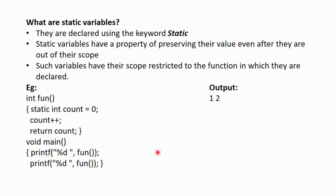Now, since count is a static variable, its value is preserved. Now, when the function fun is called for the second time, then here the value of count is not again initialized to 0, but its previous value is preserved, that is 1. Now, 1 is incremented and now the count variable will hold the value 2.